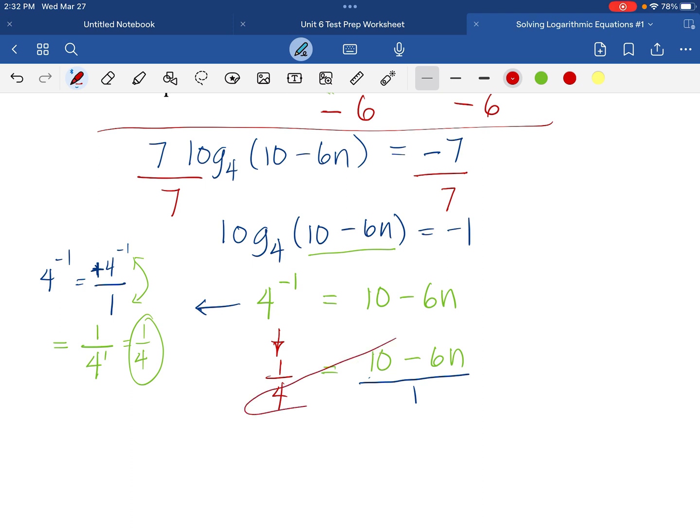And now we are going to cross-multiply because we are dealing with a ratio. So, we'll have 4 times 10 minus 6n. On the right side, we'll just be 1 times 1.